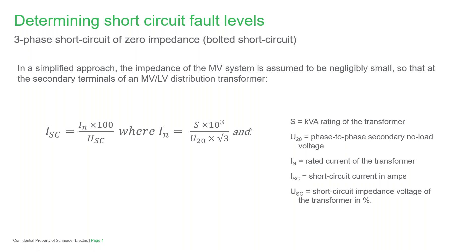Except in very unusual circumstances, this type of fault is the most severe and the simplest to calculate. The simplified calculations and practical rules which follow will give conservative results of sufficient accuracy in the large majority of cases for installation design purposes. The formula shown can be used to calculate the short circuit current in amperes. The factors to consider are the rating of the transformer, the phase-to-phase secondary neutral load voltage, and the short circuit impedance voltage of the transformer as a percentage.